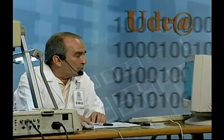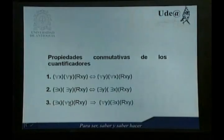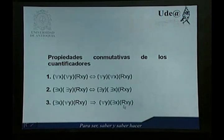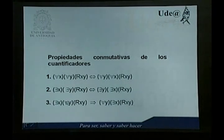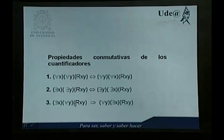Si se tiene un cuantificador existencial seguido de universal tal que R de XY, esto implica que para todo Y existe un X tal que R de XY. Sin embargo, esta implicación no es reversible: para todo Y existe un X tal que R de XY no implica que exista un X tal que para todo Y, R de XY. Se verán contraejemplos para mostrar la falsedad de la afirmación en este sentido.